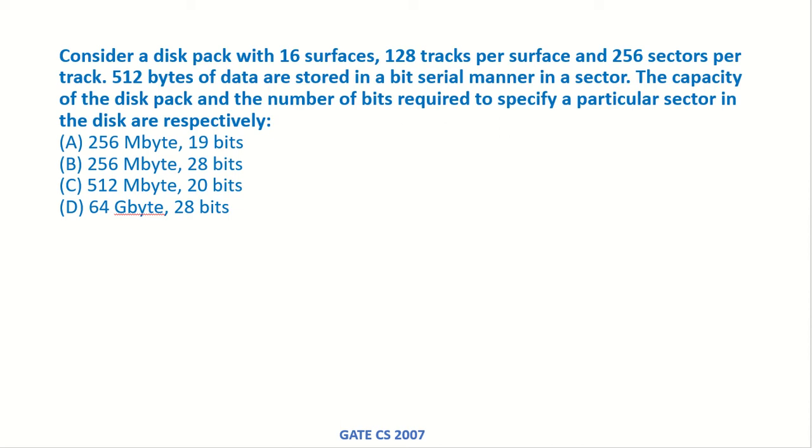Consider a disk pack with 16 surfaces, 128 tracks per surface and 256 sectors per track. 512 bytes of data are stored in a bit serial manner in a sector. The capacity of the disk pack and the number of bits required to specify a particular sector in the disk are what?